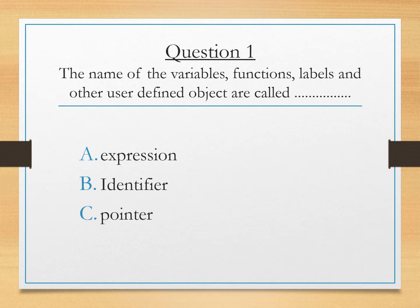Number 1. The name of the variable, function, labels and other user defined objects are called: A. Expression, B. Identifier or C. Pointer.